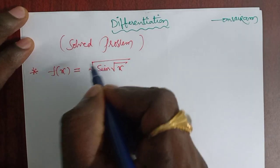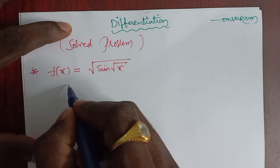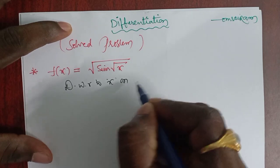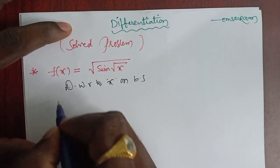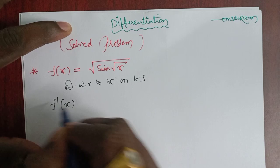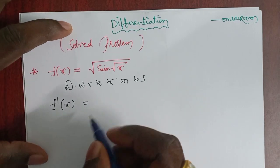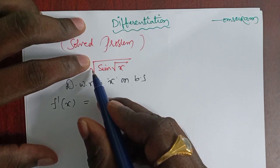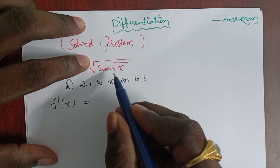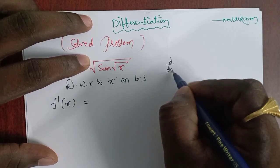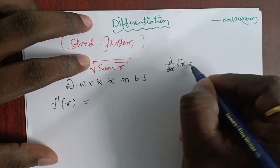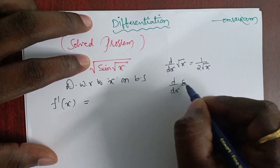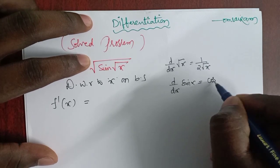The main function is √x. Differentiating with respect to x on both sides gives f'(x). We have three functions. The derivative of √x is 1/(2√x), and the derivative of sin x is cos x.